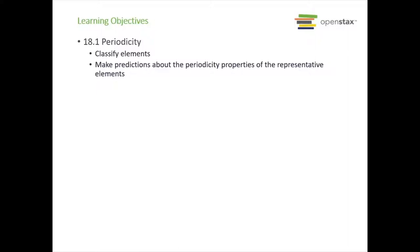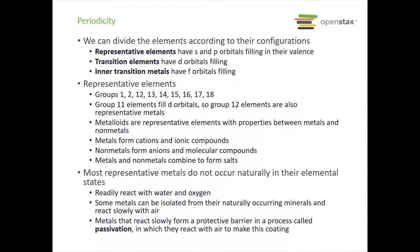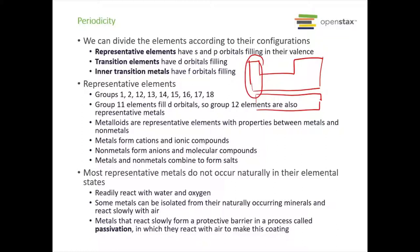We're going to jump into 18.1, which is periodicity. In this section we're going to classify elements and make predictions about the periodicity properties of the representative elements. The first thing to know is that we can divide our elements according to their configuration. Looking at the periodic table, we have the representative elements — these are the ones that have S and P orbitals as their outermost valence shells — so that's going to be your group 1 and 2.